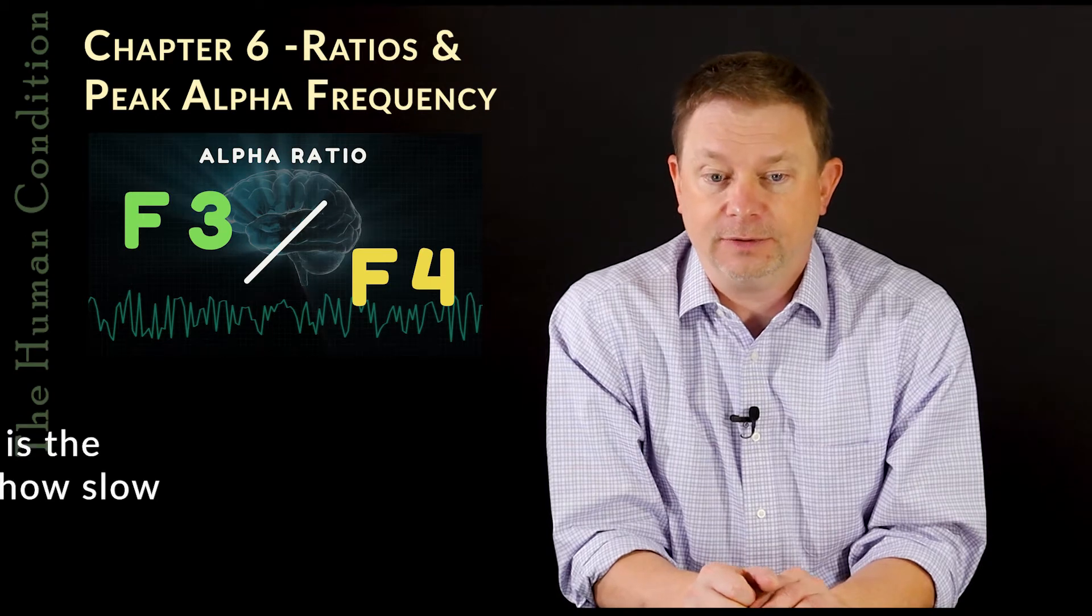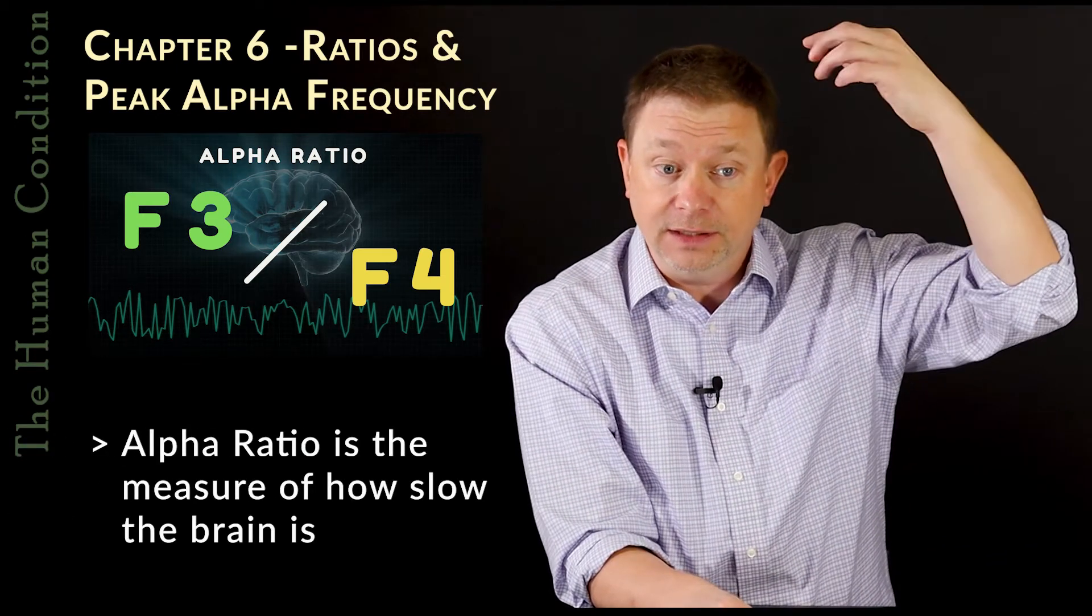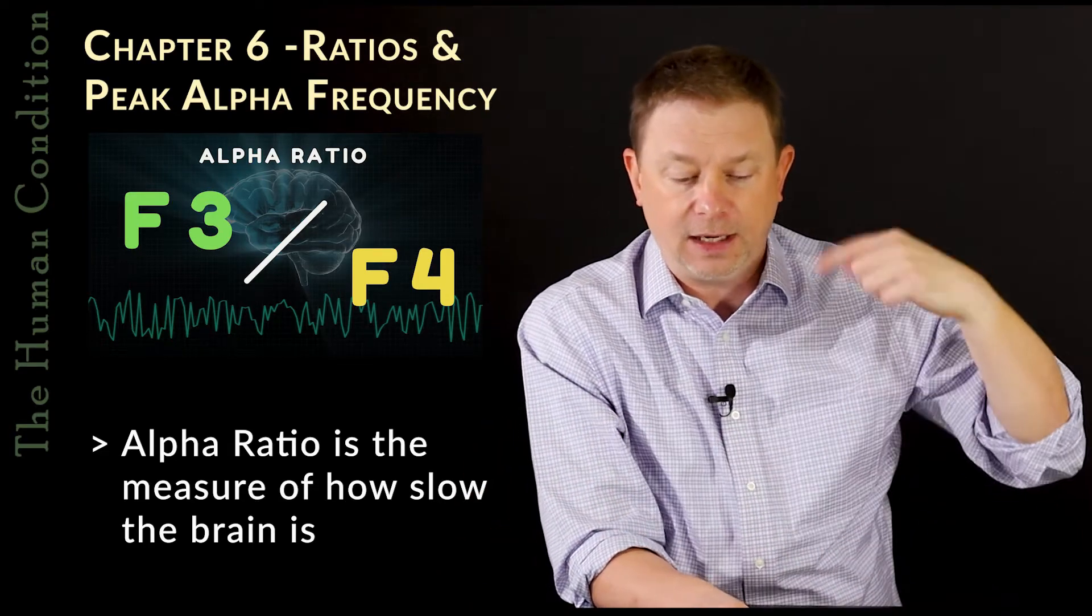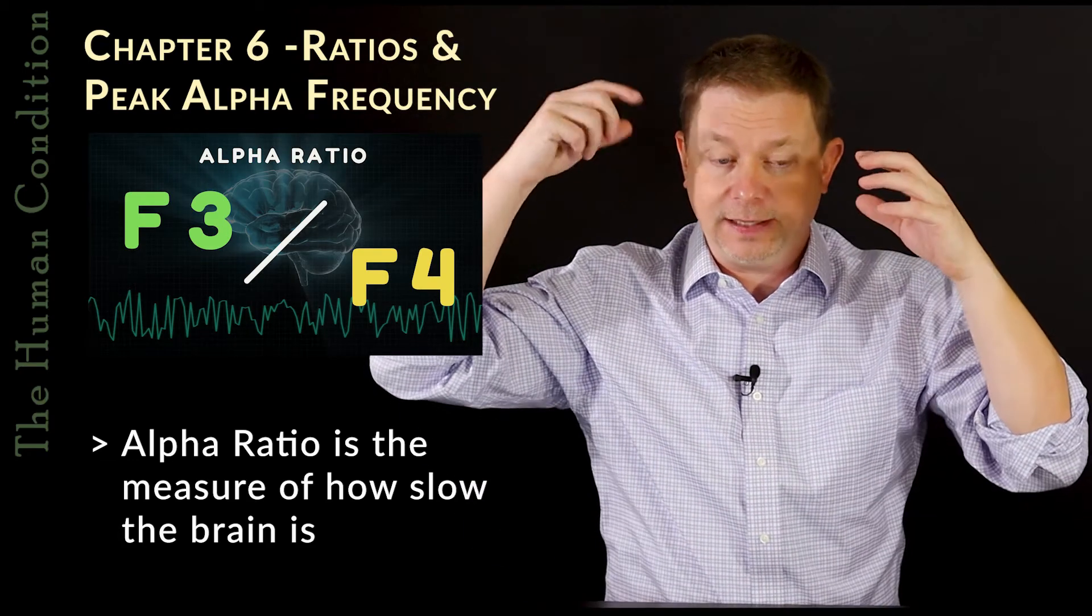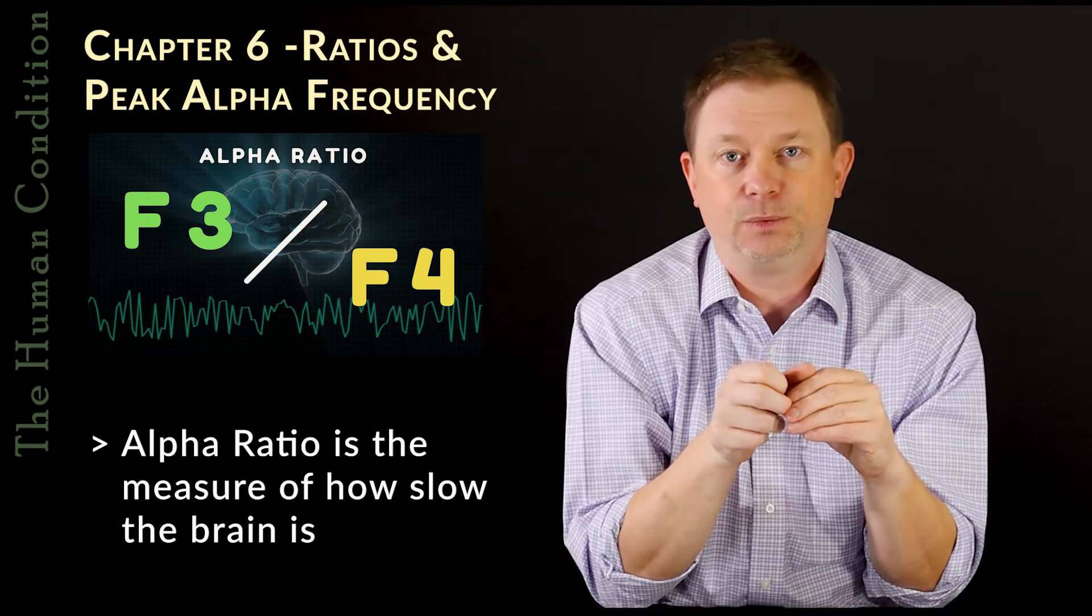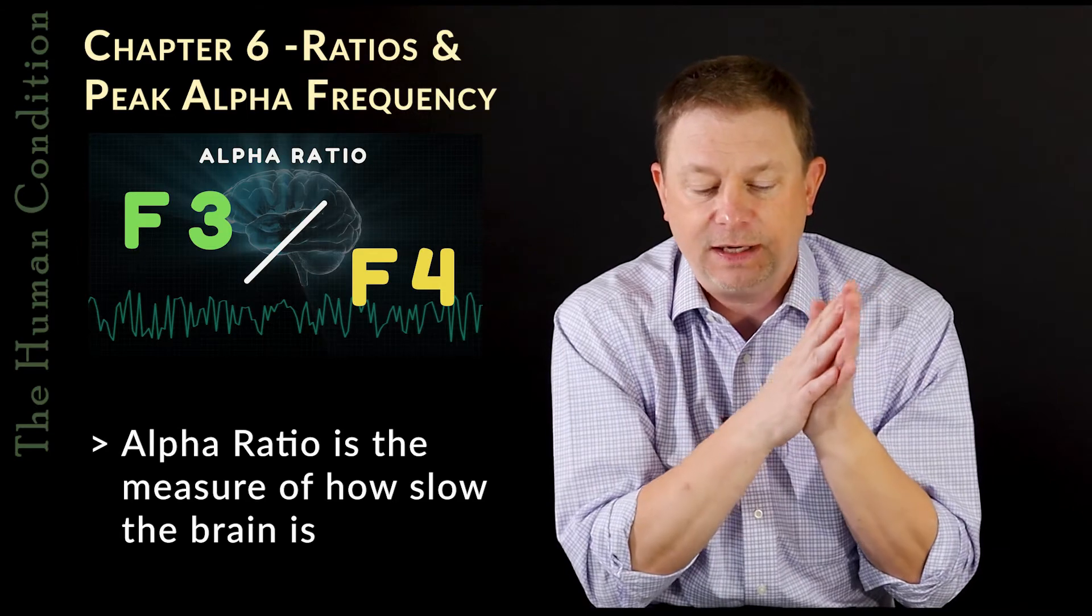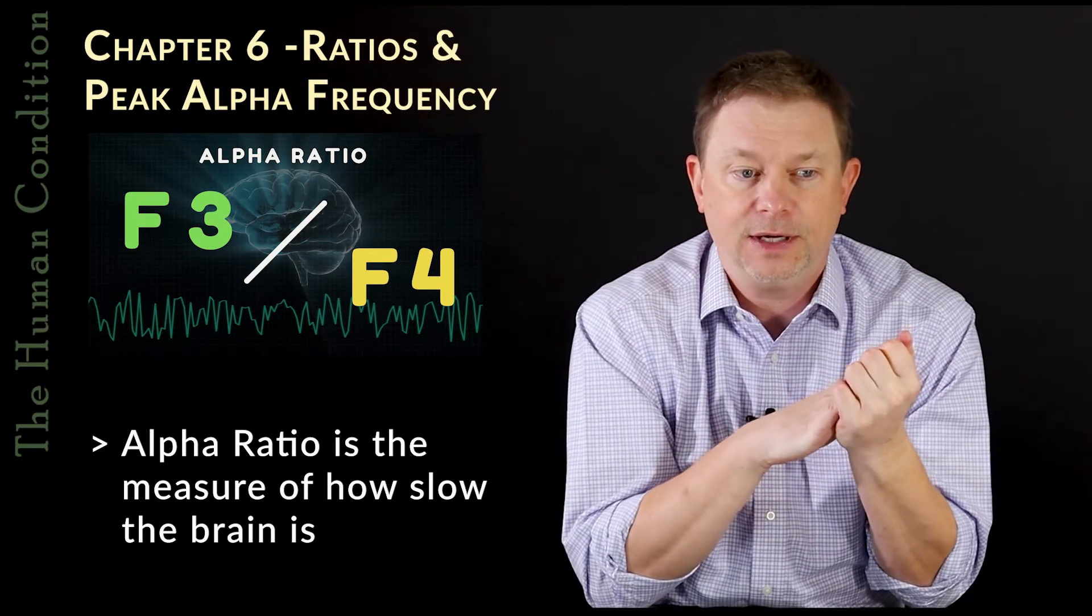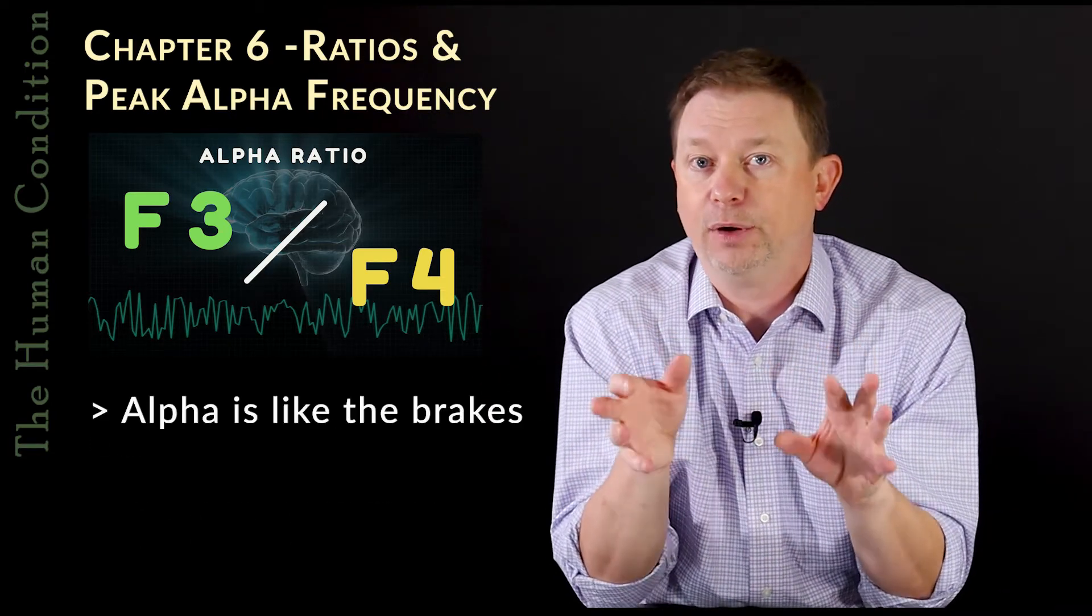The alpha ratio is the measure of how slow the brain is. So a high F3 alpha means the brain is suppressed because alpha is a suppressive wave. So a high F3 alpha and a low F4 alpha means that generally the output of the left frontal lobe is going to be stronger. So in that case, we might get a depression. So it's a little bit counterintuitive. So when you see F3, F4 alpha ratio, remember it's flipped on its head. It's not all function of the left hemisphere. It's the alpha function of the left hemisphere, and alpha is like the brakes.